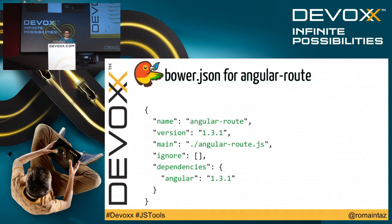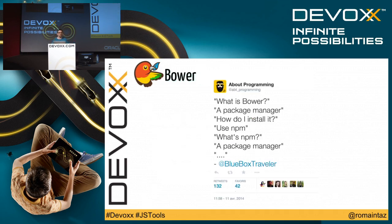I found a joke on Twitter a few months ago: what is Bower? It's a package manager. How do I install it? I use npm. And what is npm? It's also a package manager. You can actually continue, because npm and Node can be installed by Homebrew — and guess what, Homebrew is also a package manager.